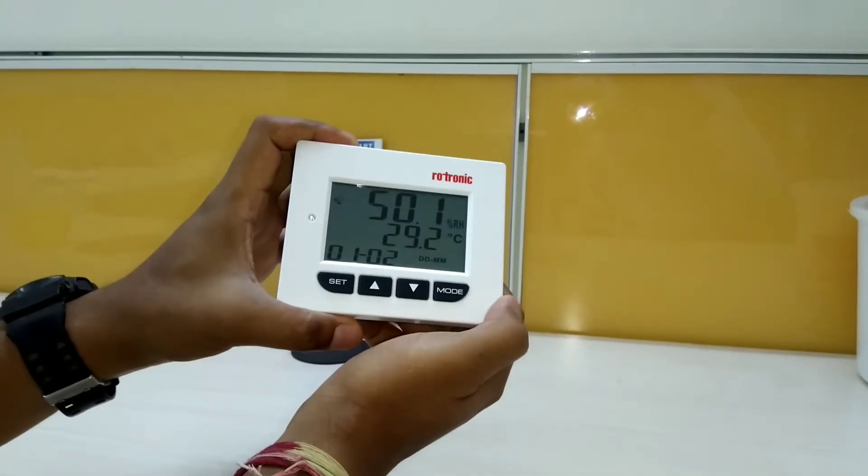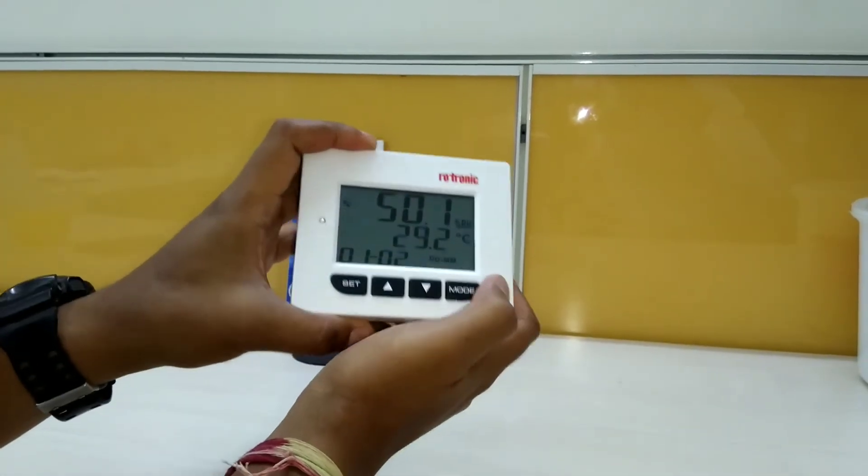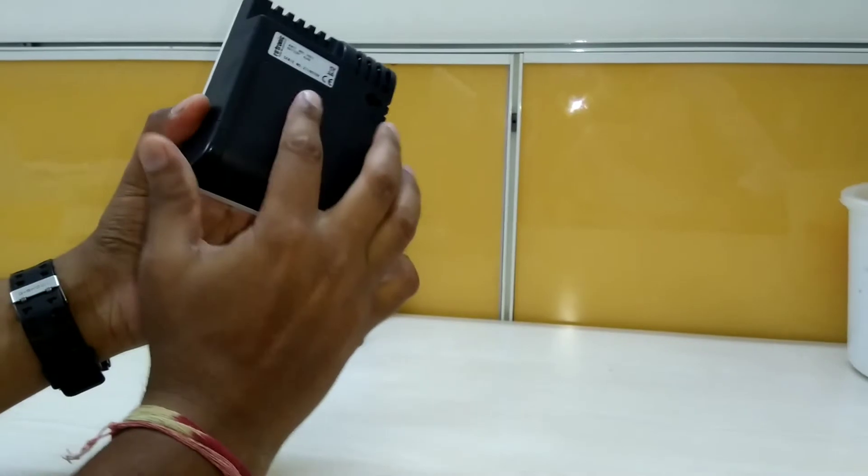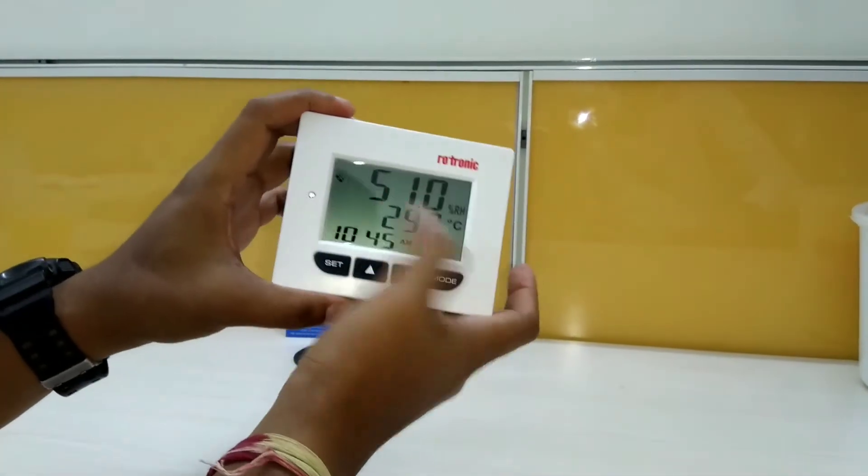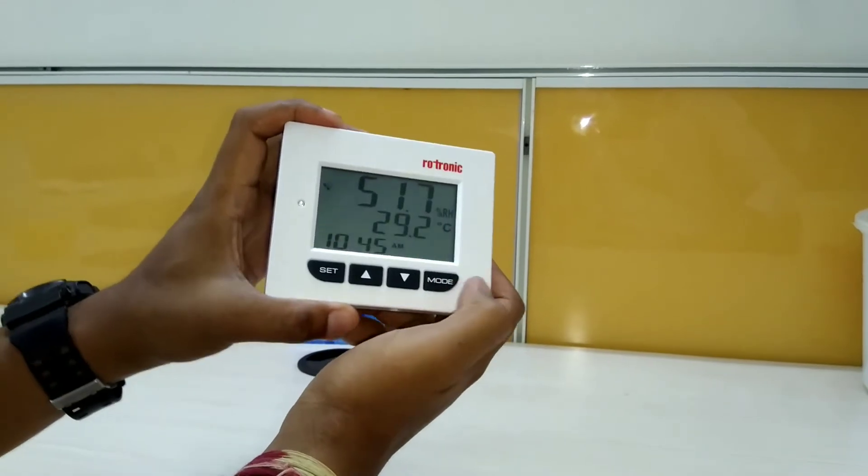To shut down this hygrometer, we don't have any option from the keys. The only method is to remove the battery and it gets completely shut down, otherwise we don't have any off button for this.